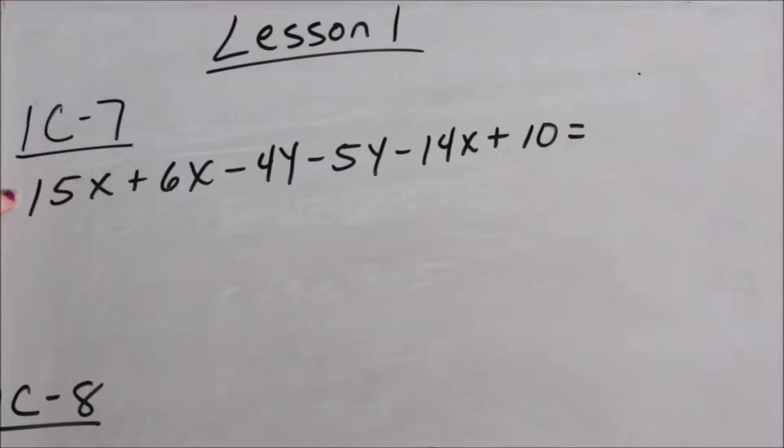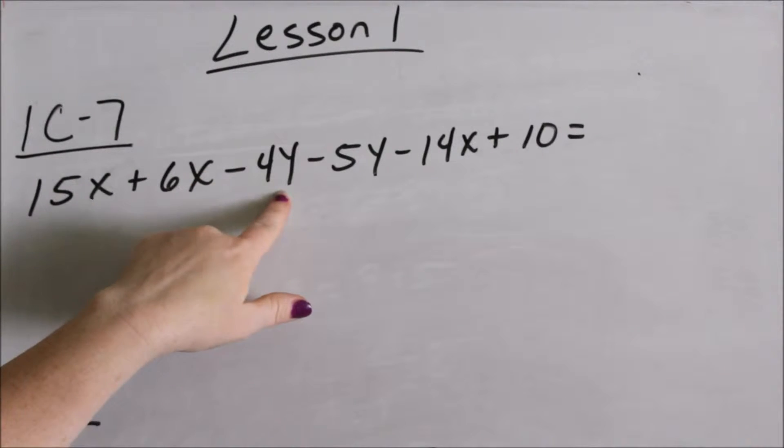This problem on 1C7 is combining like terms. There is a phrase that Matthew C. likes to say: to add or combine, you must be the same kind. In other words, you can only add X's to X's, Y's to Y's, whole numbers to whole numbers.